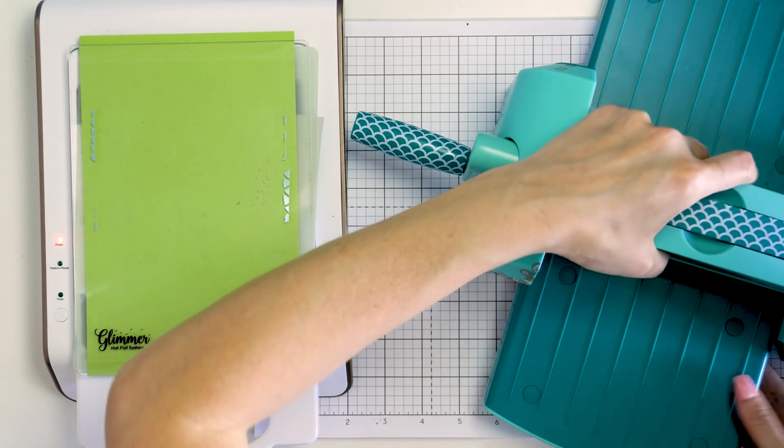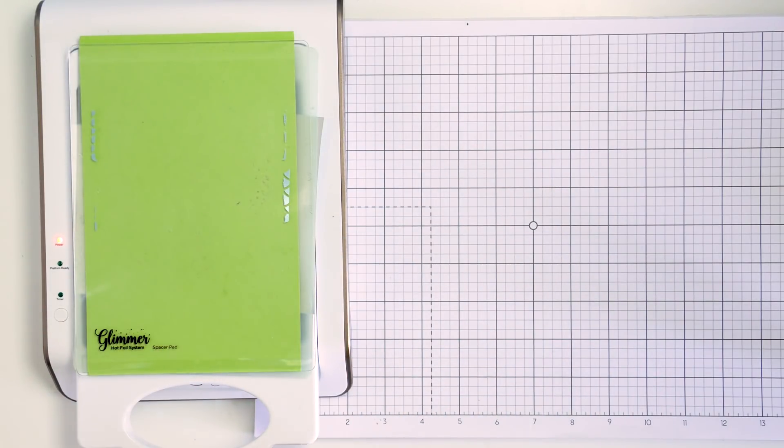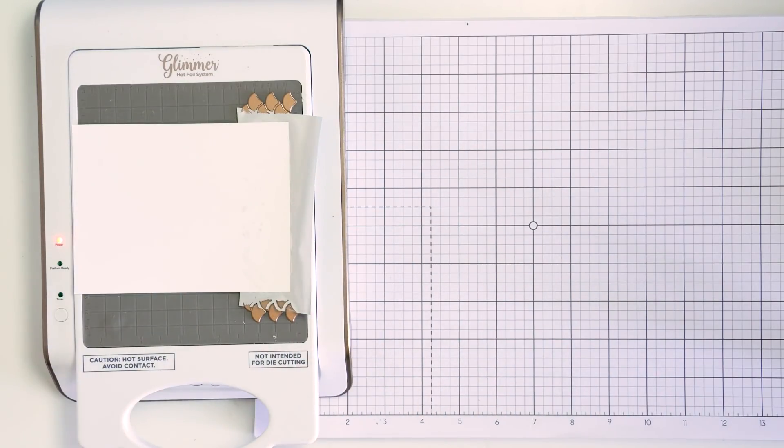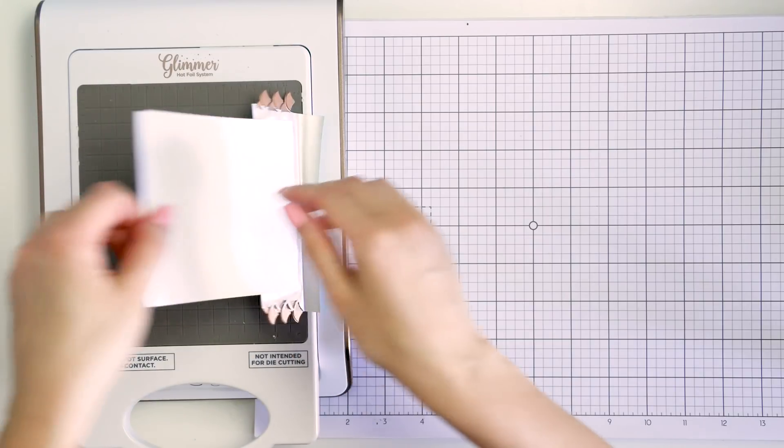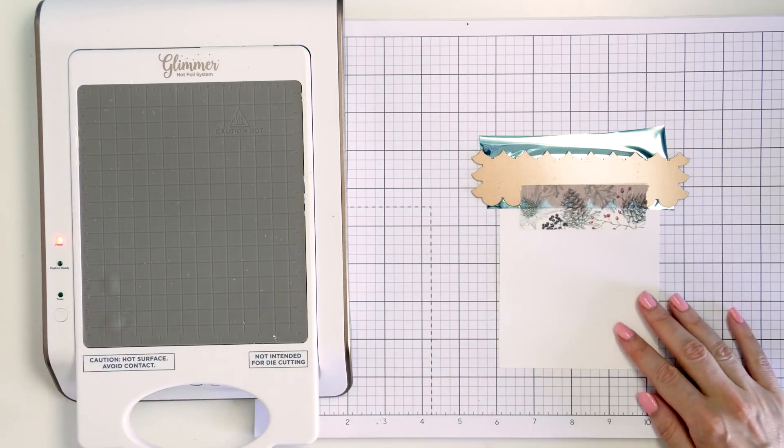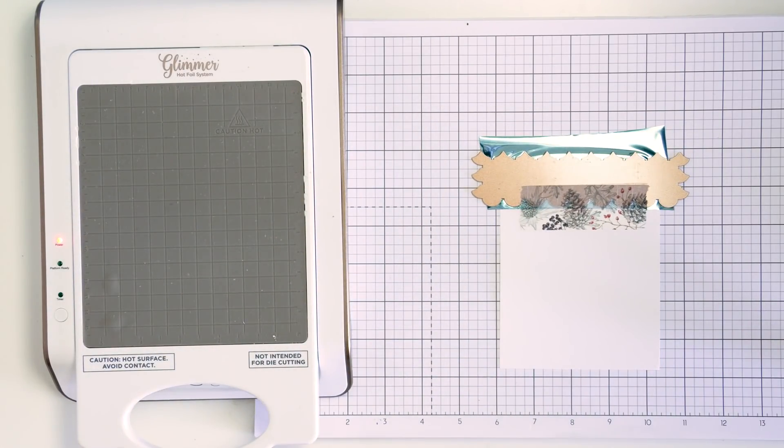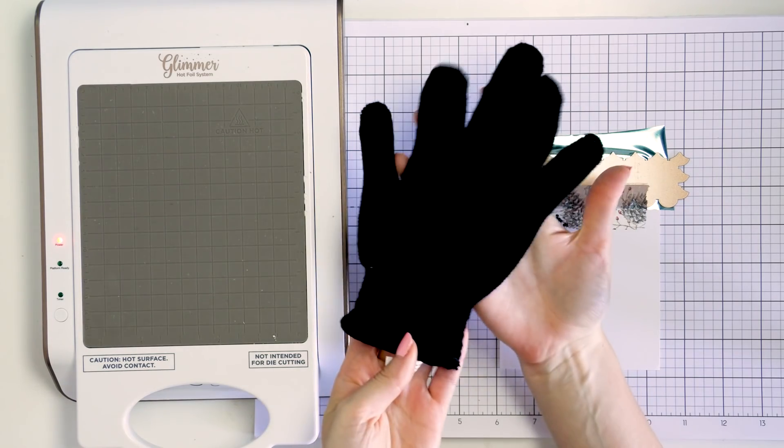Now I need to remove the glimmer plate, peel the foil, reposition the plate and add the foil all while that glimmer plate is hot. So what do you do? You can wait for the plate to cool off and that might take several minutes or you can use this trick. Wear a glove.